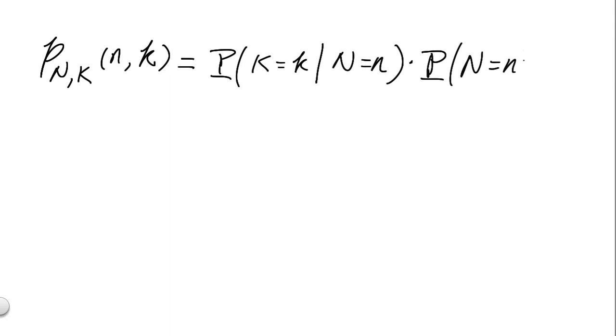For part b, things are getting a little more complicated. This time, we want to compute the joint PMF between n and k, for n equal to little n and k equal to little k. What we'll do first is to use the law of conditional probability to break the joint probability into the product of P(k = k | n = n) multiplied by the probability that n is equal to little n.